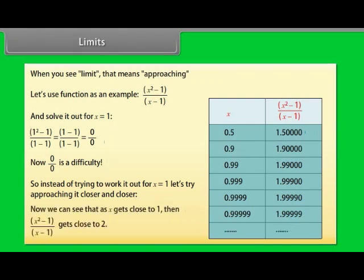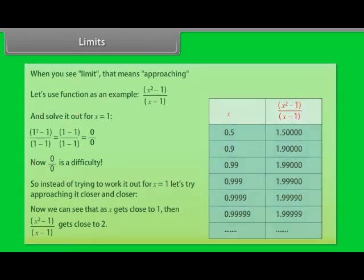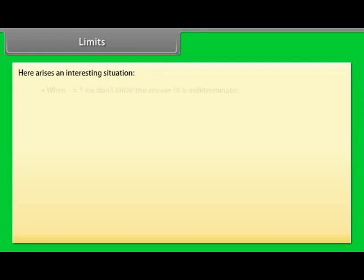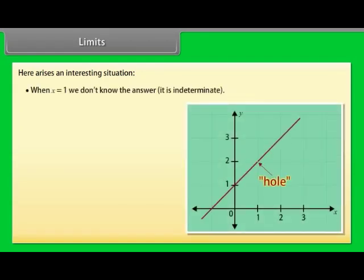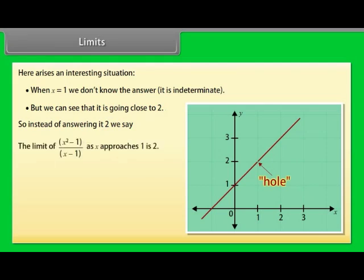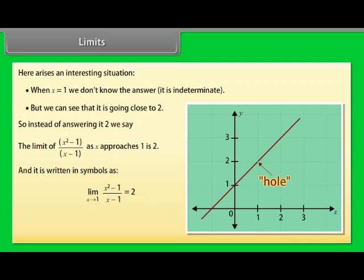We can see that as x gets closer to 1, (x²−1)/(x−1) gets close to 2. When x=1 we don't know the answer — it is indeterminate — but we can see it is going close to 2. So instead of saying the answer is 2, we say: the limit of (x²−1)/(x−1) as x approaches 1 is 2. In symbols: lim(x→1) of (x²−1)/(x−1) = 2. We cannot tell the value at x=1, but as we approach 1, the limit is 2.